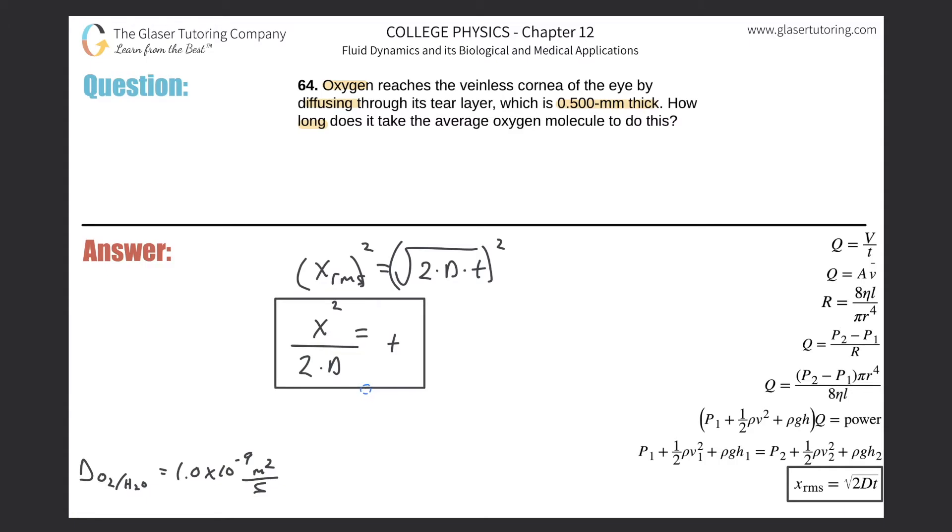So now all we need to do is just solve for t. Let's plug in what we know. The distance was a half a millimeter but remember you need that in terms of a meter, so take the half a millimeter, divide it by 1000, and then you're going to square that result. Then divide that now by 2 multiplied by that diffusion coefficient and we wrote it down, this is right from the book: 1.0 times 10 to the minus 9.